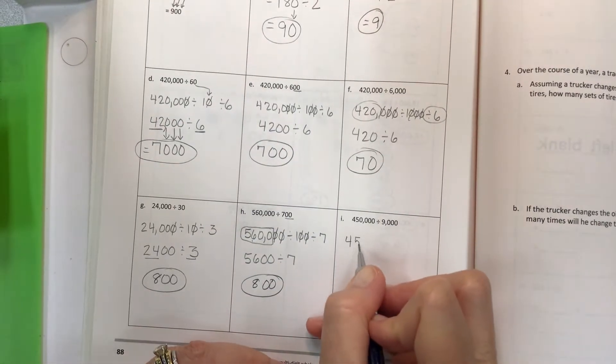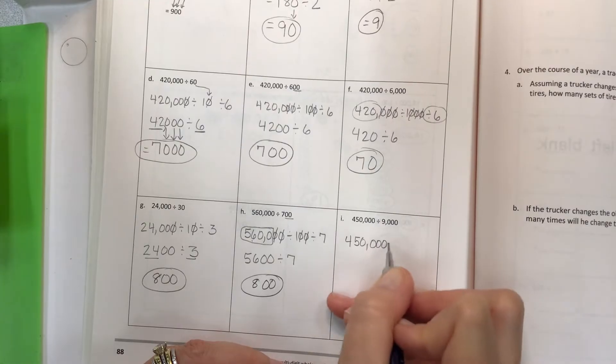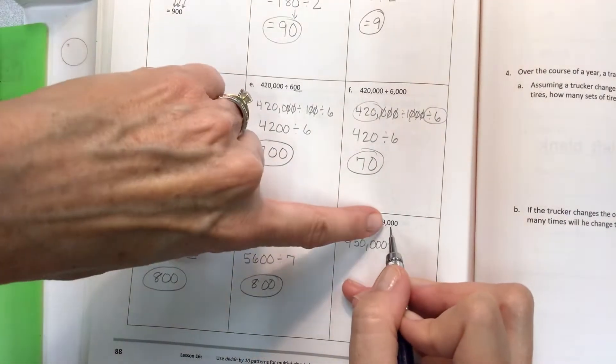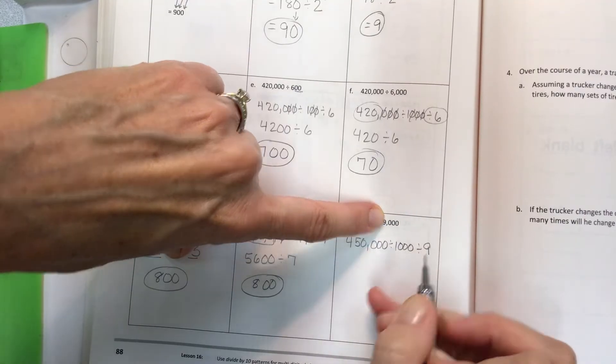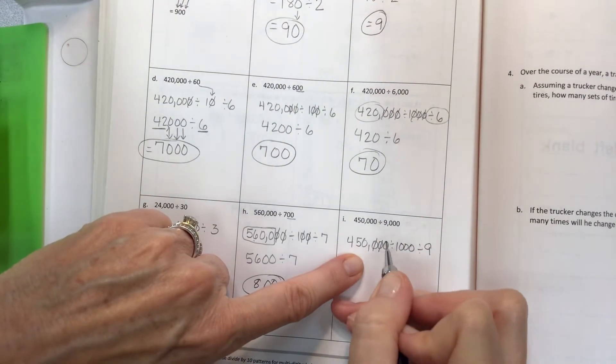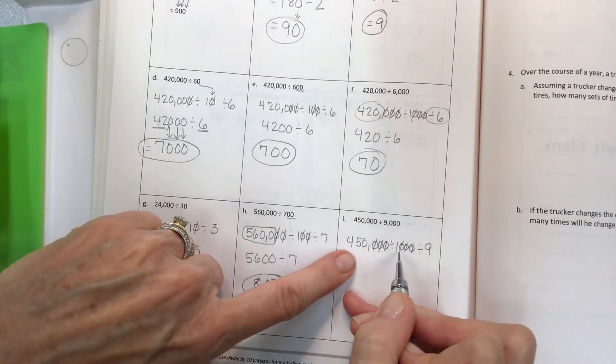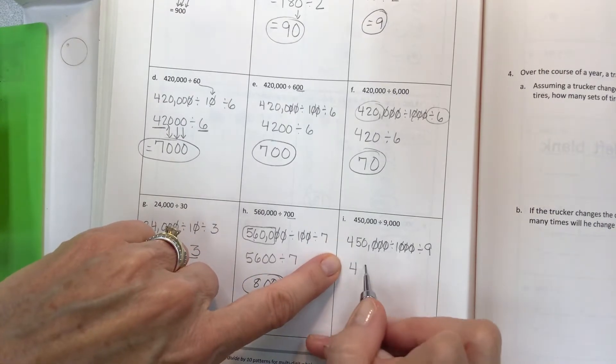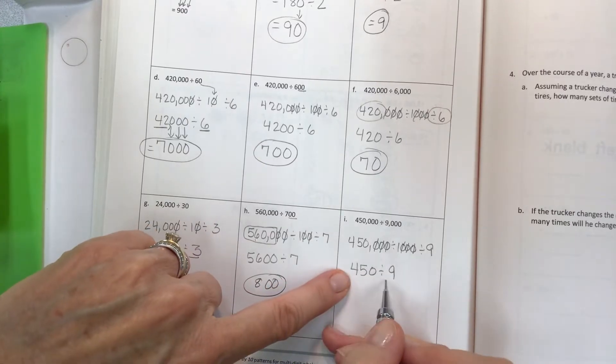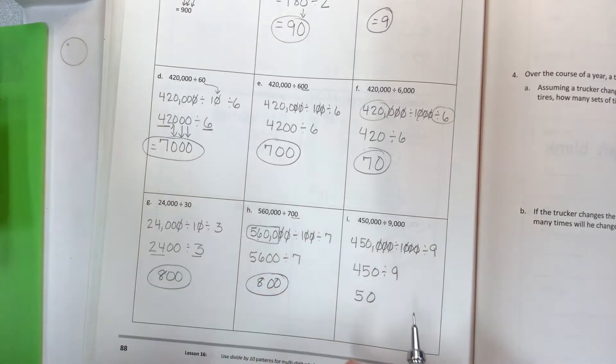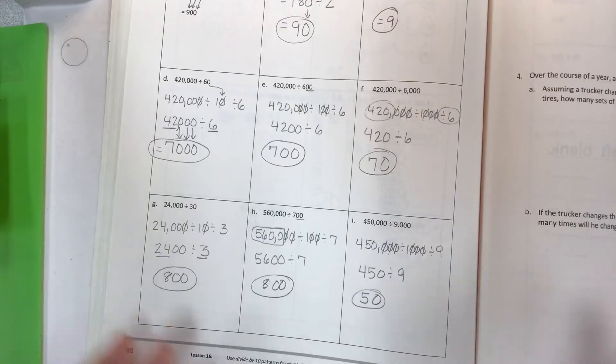Last one: 450,000. Notice that you have three zeros on 9,000, so take the 9 out but take the thousand out first. Offset your zeros. Divide 450 by 1 to get 450. Then divide by the 9 that's left. 45 divided by 9 is 5, and your zero comes down for your 50.